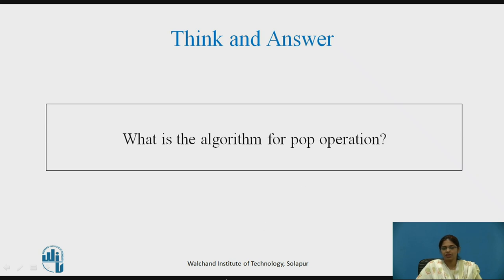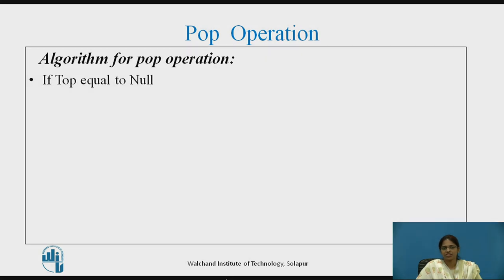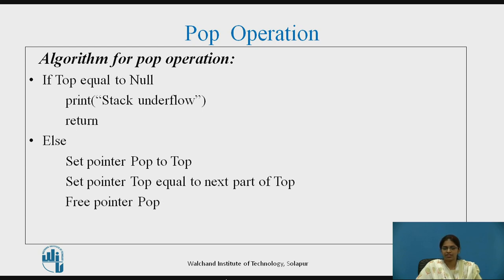Try to think of an answer: what is the algorithm for pop operation? Pause the video and note down the answer. Algorithm for pop operation: first check if top is equal to null — check if stack is empty. If stack is empty, print that stack is underflown and return. Else, the stack is not empty and we pop one element: set pointer pop to the top element, set pointer top equal to the next part of top, and then free the pointer pop.